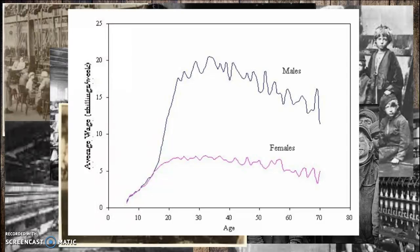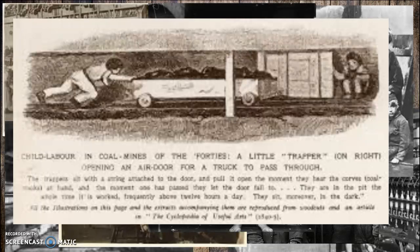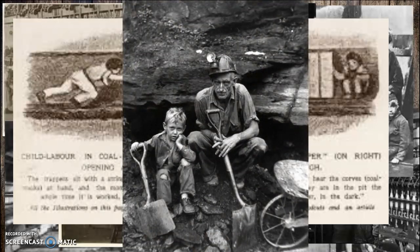Children worked in the coal mines — officially starting at age eight, but unofficially some began as early as three to five years old. Finally, the Mines Act was passed in 1842, prohibiting females and children under the age of 10 from working in the mines. Still, 10 years old is hardly old enough to work in a coal mine.